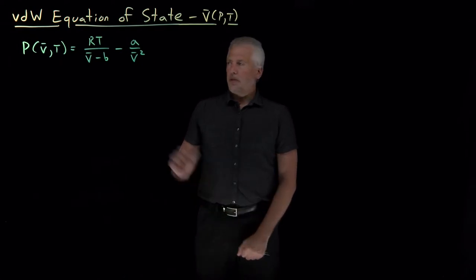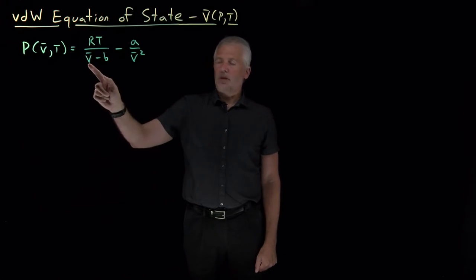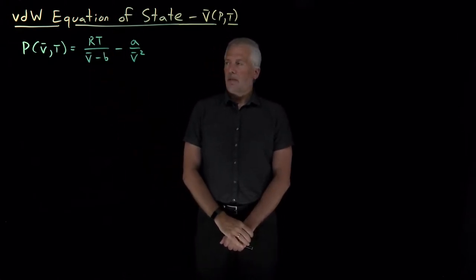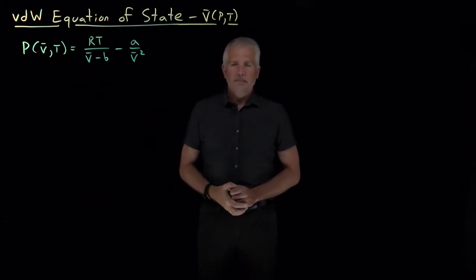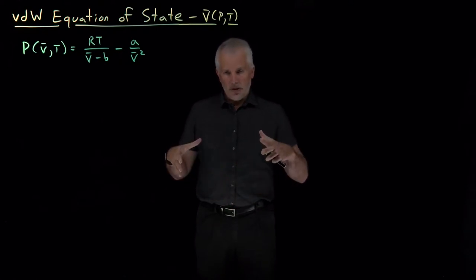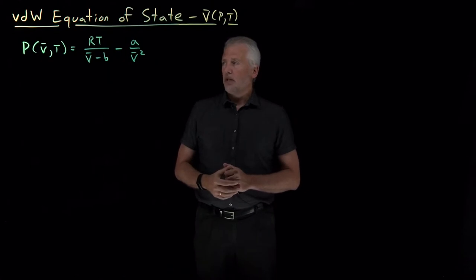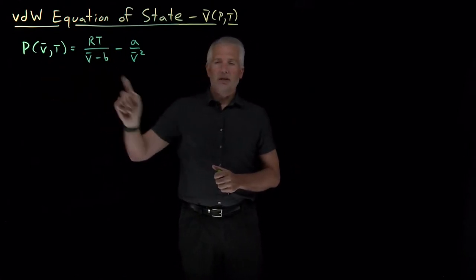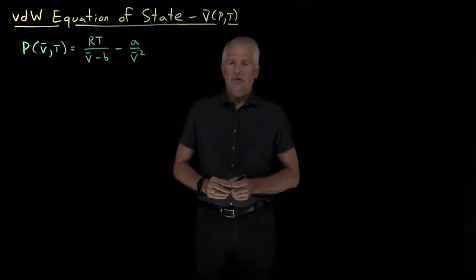We've seen that the Van der Waals equation of state tells us how to calculate the pressure of a Van der Waals gas if what we know is the molar volume and the temperature. But very often we don't know the volume and temperature. The properties most easily controlled in the lab are certainly the temperature, and it's easier to directly control the pressure we apply to a gas than to directly choose the volume. So very often what we know is the pressure and the temperature, and we'd like to know the molar volume. So we want to rearrange this expression to solve for V̄ as a function of P and T.